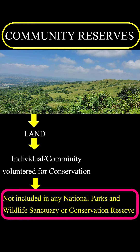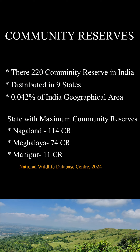Currently, as of February 2024, there are 220 community reserves. The state of Nagaland has the maximum number of community reserves, followed by the states of Meghalaya and Manipur.